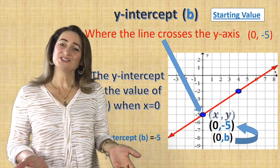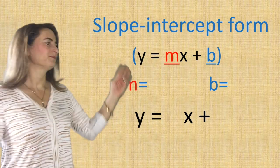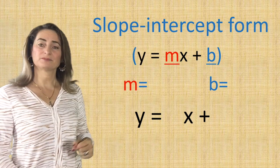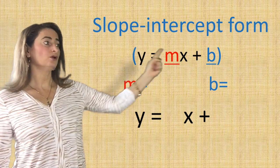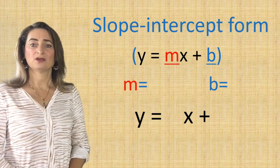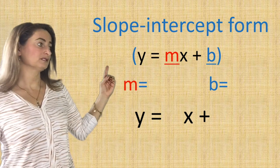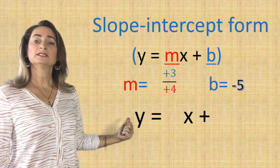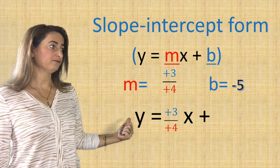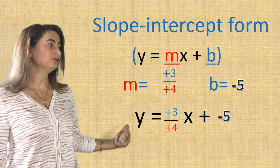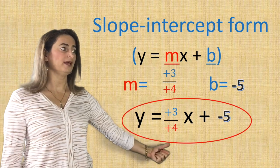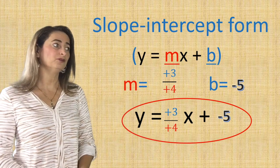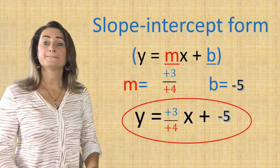Now that we found the slope and the y-intercept, let's write the equation. Slope-intercept form is always y equals mx plus b, where m is the slope and b is the y-intercept. We already know the slope is three-fourths and b is negative 5. Substitute m with three-fourths and b with negative 5 — you end up with y equals three-fourths x plus negative 5, or y equals three-fourths x minus 5.